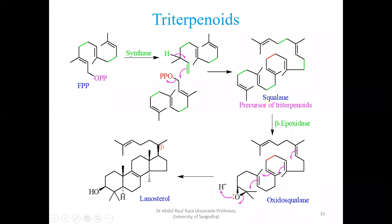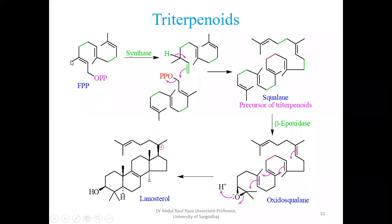When triterpenoids are synthesized it is entirely different. This is a repetition since the same shall be happening in tetraterpenoids. Farnesyl pyrophosphate — a 15-carbon unit — undergoes the action of an enzyme called synthase, which isomerizes this unit. The farnesyl pyrophosphate unit is modified and moves to this new position.